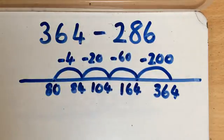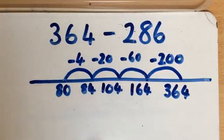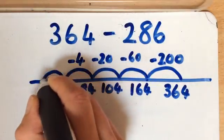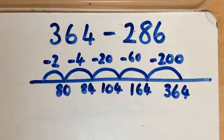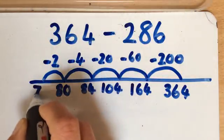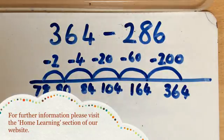And then finally you just need to take away that last 2. Counting back from 80, you've got 79, 78. And that's our final answer.